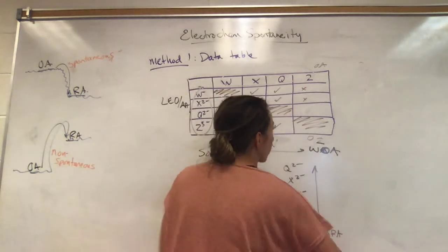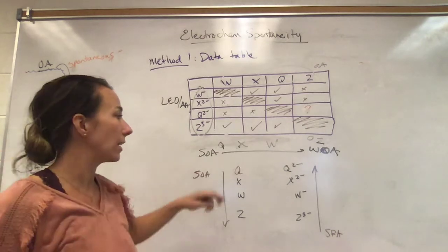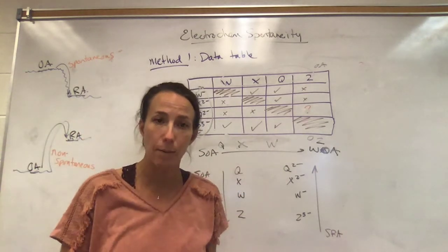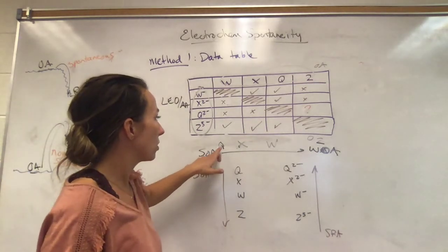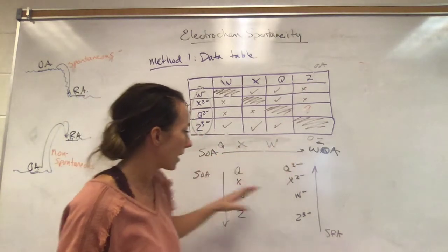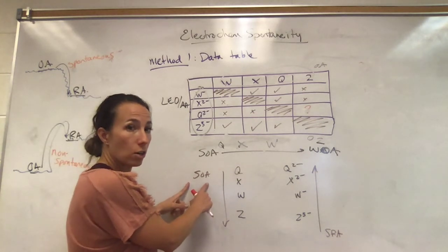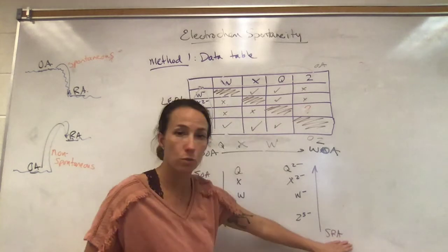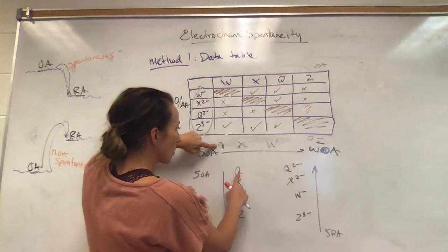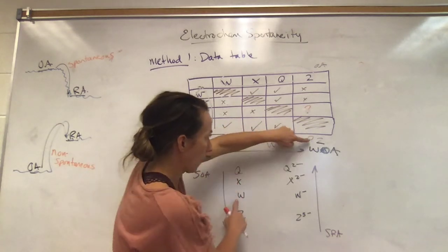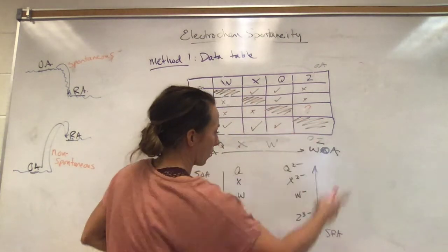But what if you need to predict what's happening? If it's a predict question, I'm going to need to set up a table that looks very similar to my data booklet so I can do the waterfall rule with it. I take those oxidizing agents — Q, X, W, and Z — and put them in order, setting this up exactly like the data booklet. In the data booklet, the strongest oxidizing agents are top left-hand corner going down, and the strongest reducing agent is at the bottom. So Q is my strongest, then the second, third, and the weakest.